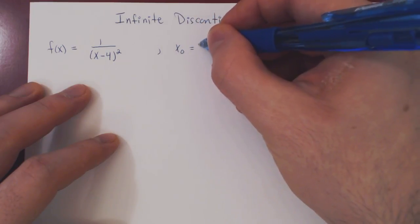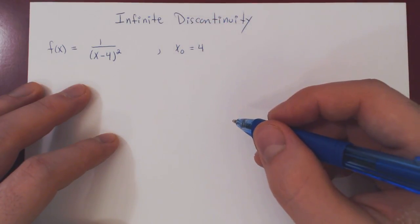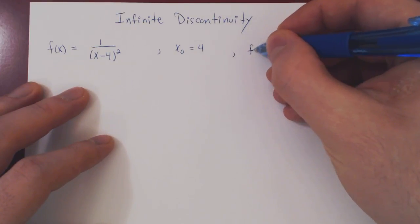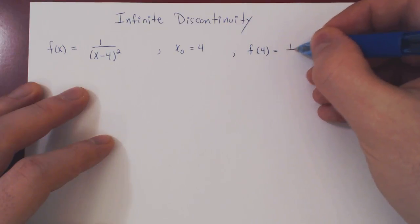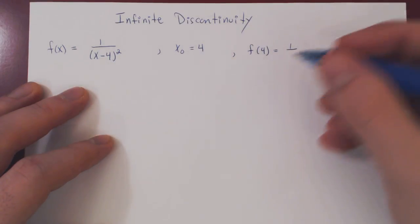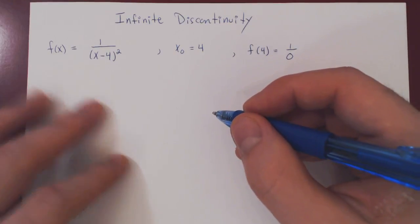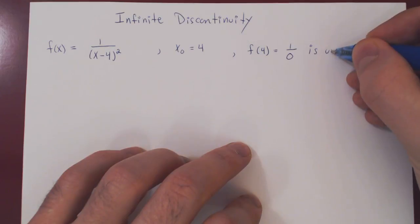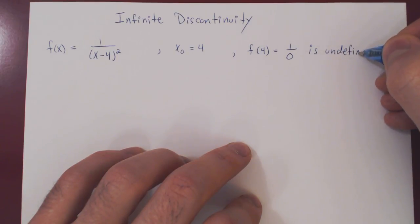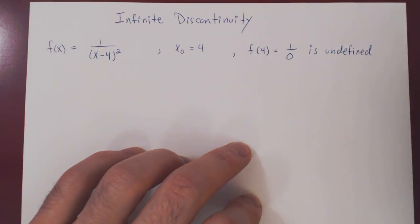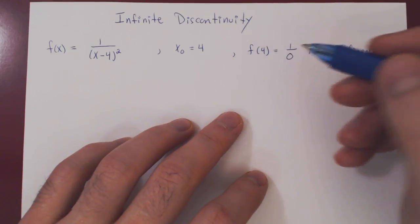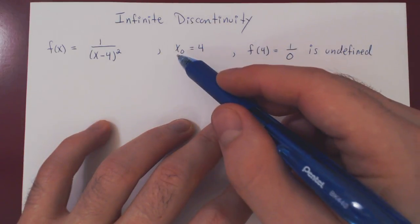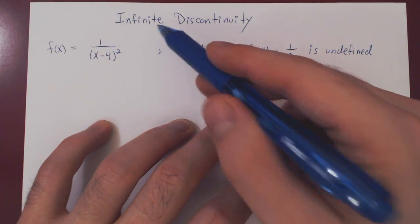So x₀ = 4 is a point of discontinuity. If we try to evaluate f at 4, we get 1 over (4 minus 4), which is 0 squared, which is 0 — so f(4) = 1/0, which is undefined. Since the function is not even defined at 4, clearly 4 is a point of discontinuity. Let's see why we call x₀ = 4 an infinite discontinuity.